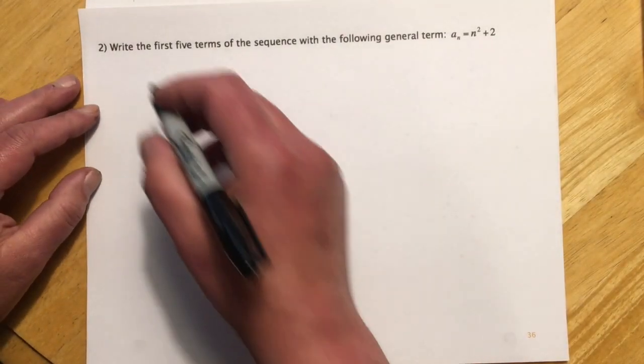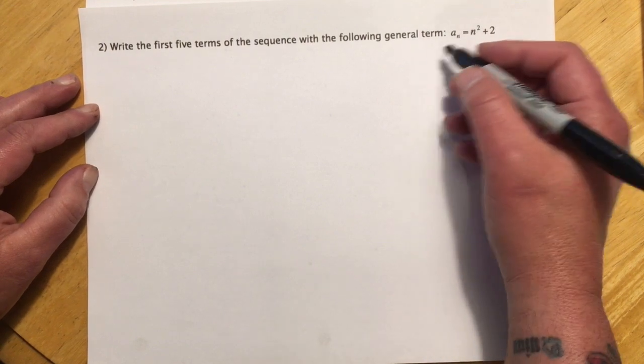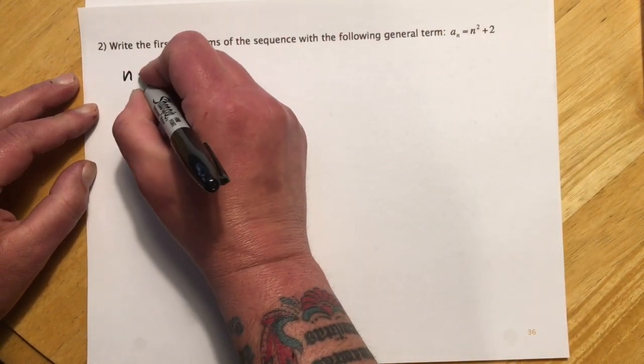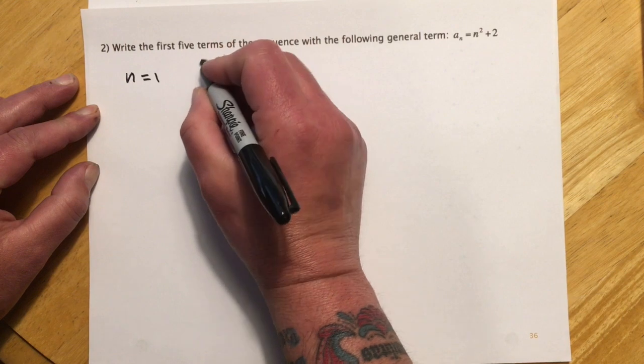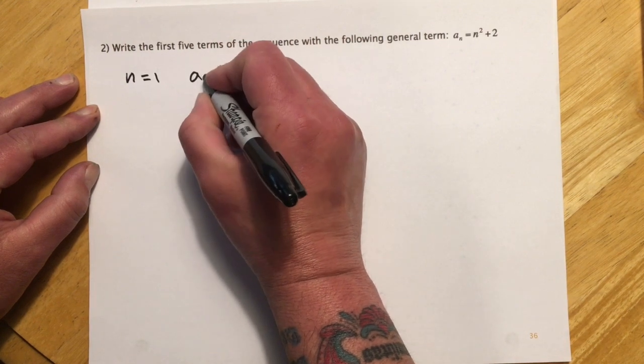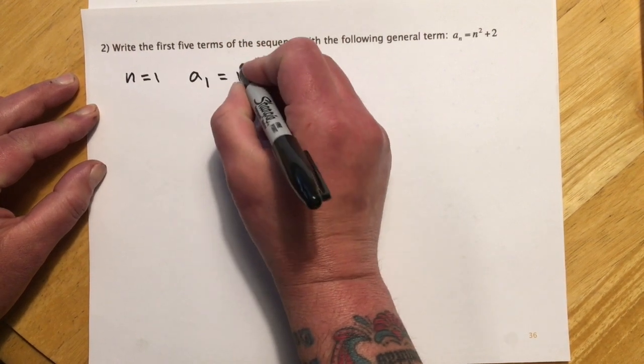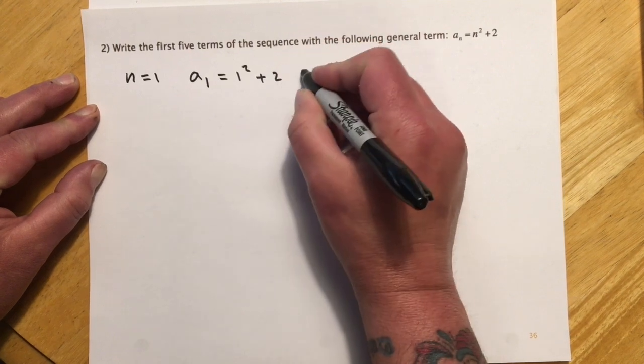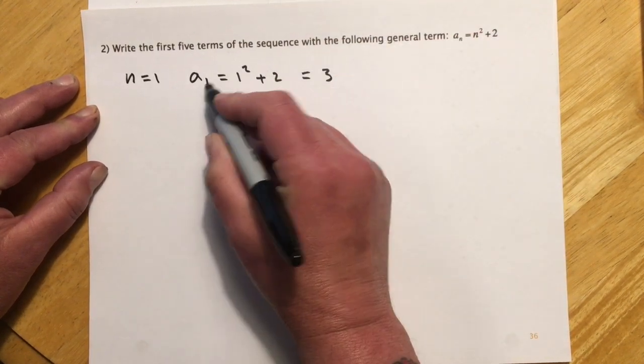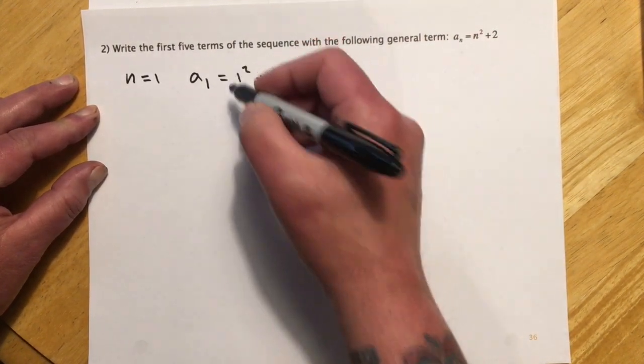So this one's the same thing, just with a different general form. So this one, n is 1. And let me write that a little better this time. So that means a sub 1 equals 1 squared plus 2, or 3. So the first term is 3 when we're plugging in 1.